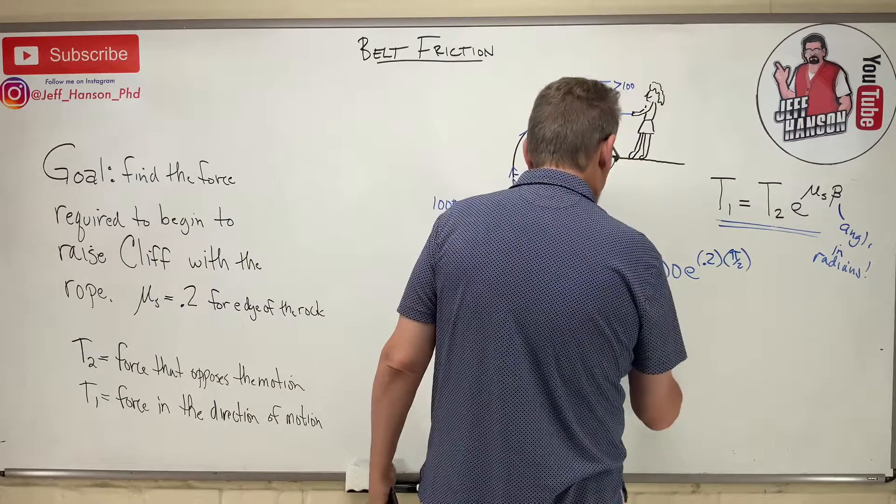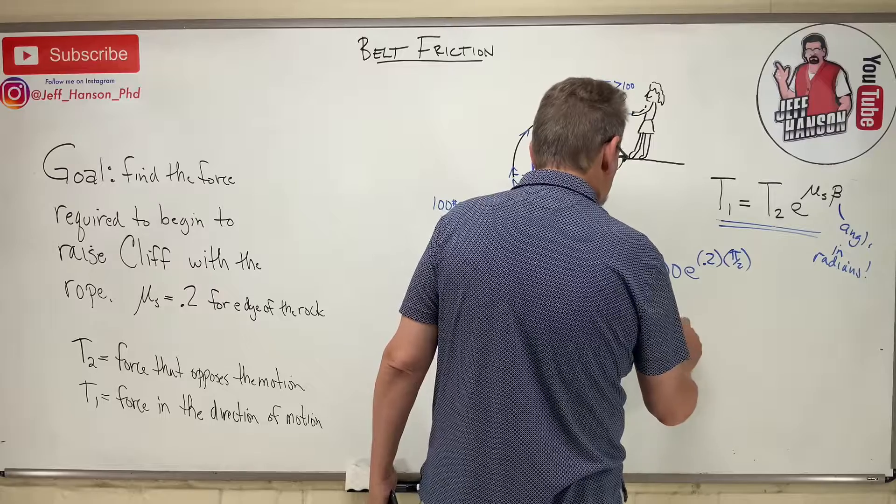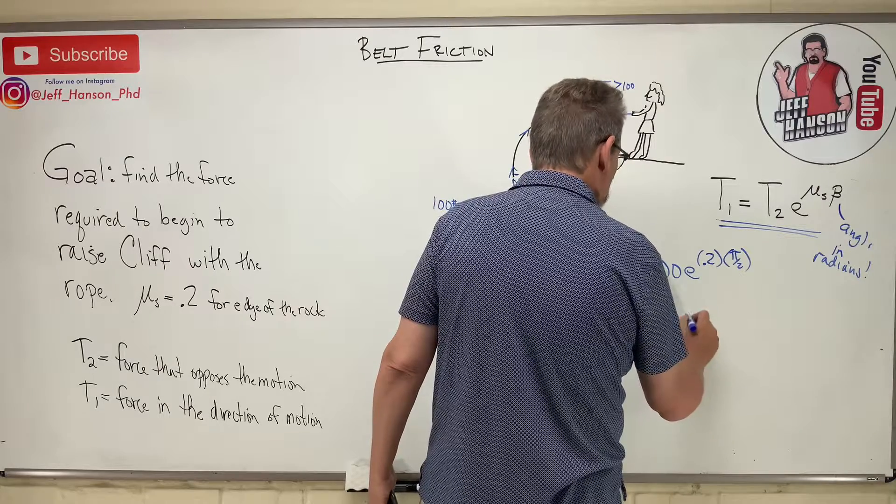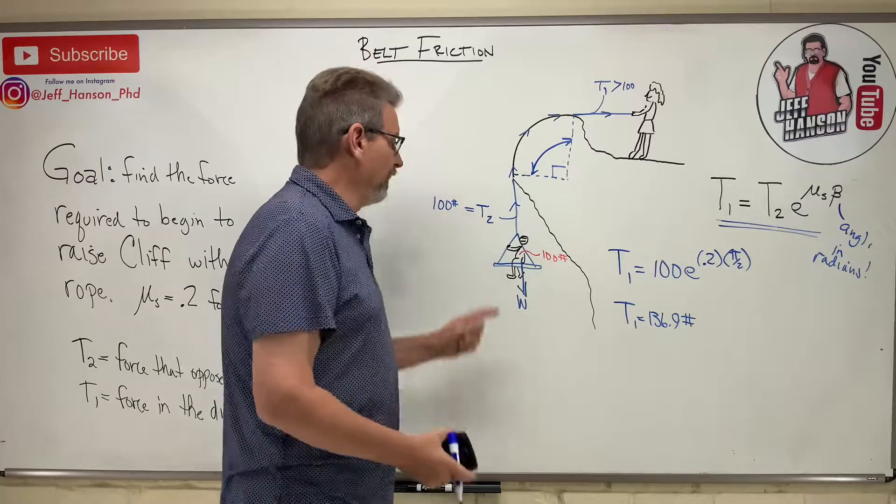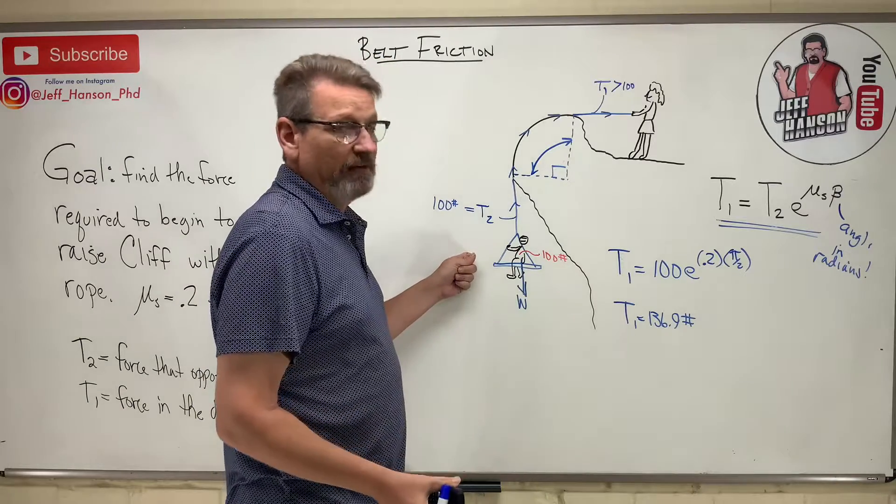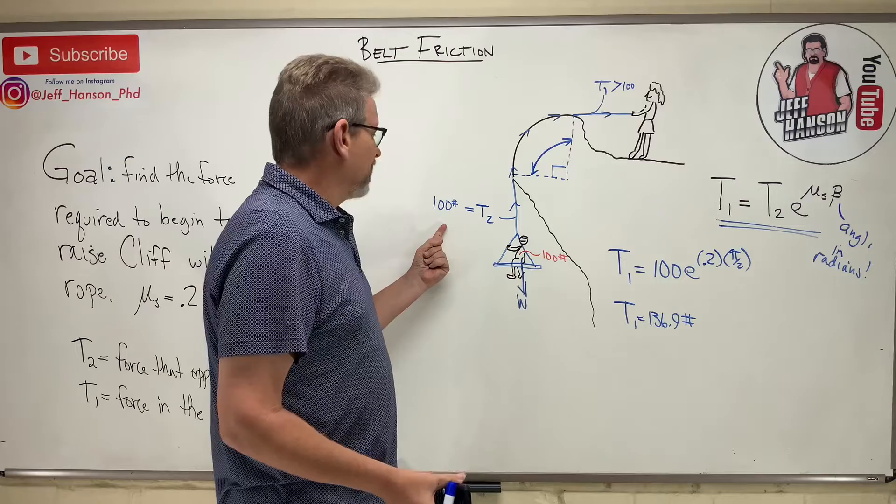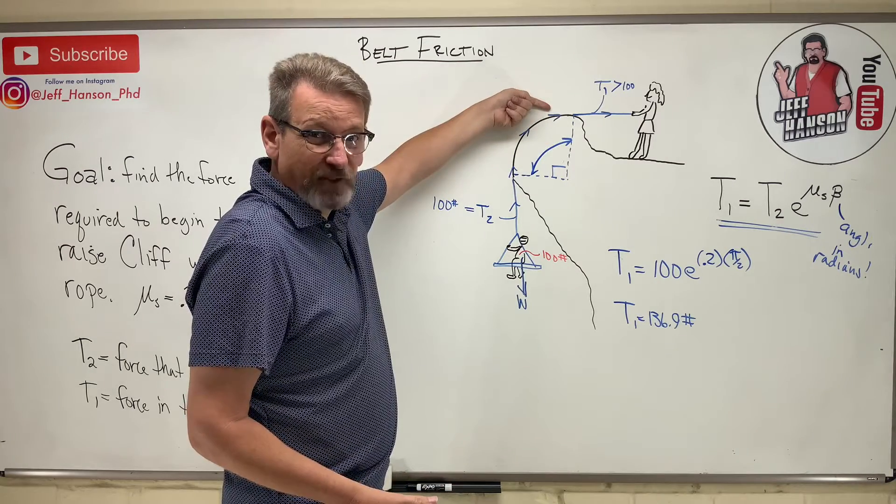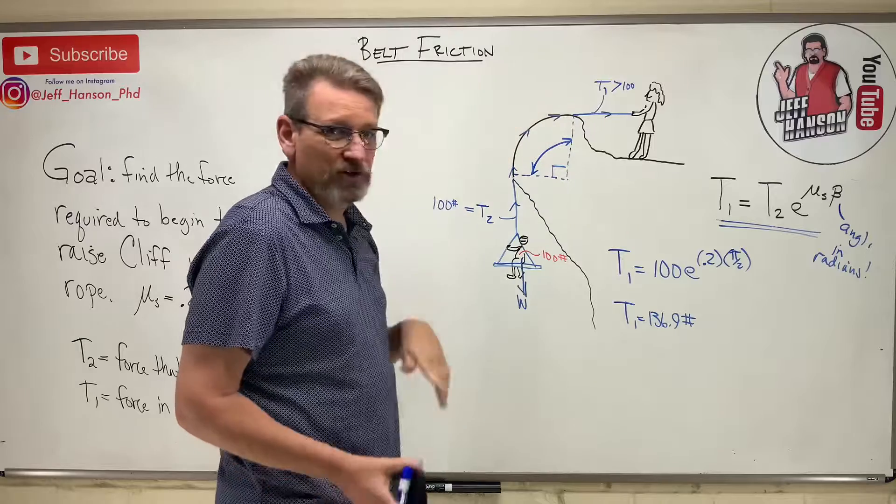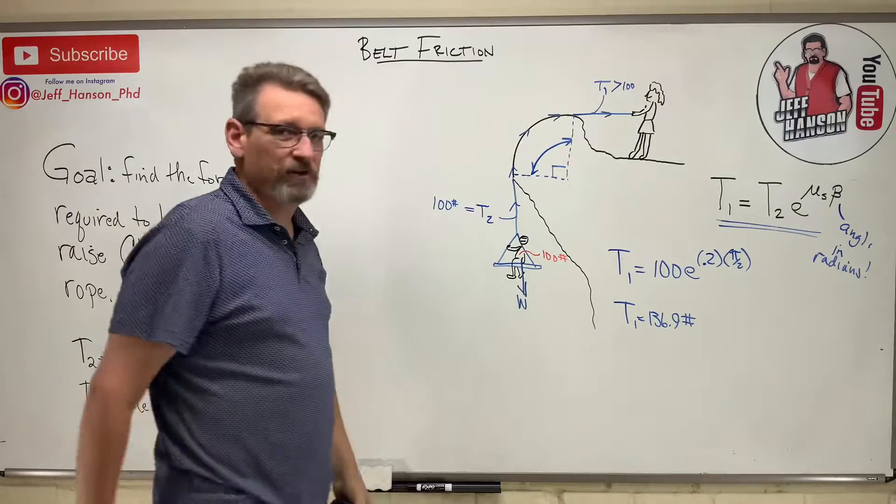So T1 is 136.9 pounds. So that's how hard Esmeralda is going to pull to lift Cliff. He's got his 100 pounds plus there's another 36 pounds worth of resistance for the friction here. That's how hard she's going to pull.